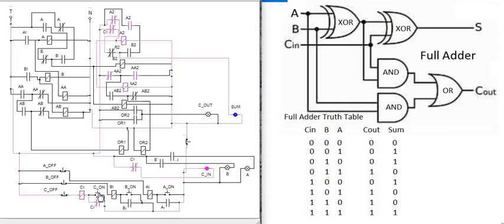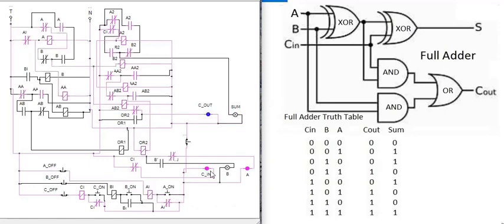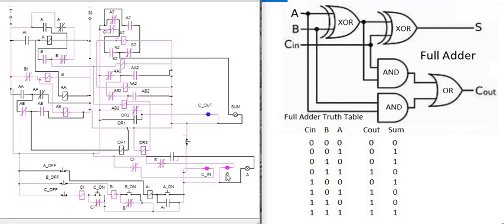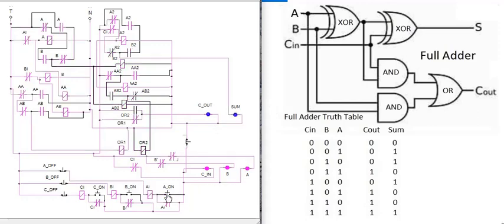With C-in 1, A 0, B 0, output is 0 and 1. Then C-in 1, A 0, B 1 gives output 1 0 1. Then C-in 1, A 1, B 0 gives 1 0 1. Then with all inputs high, 1 1 1, both carry-out and sum are high.